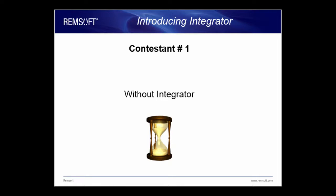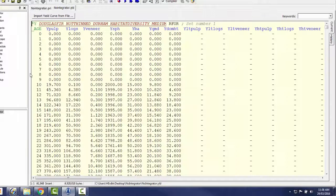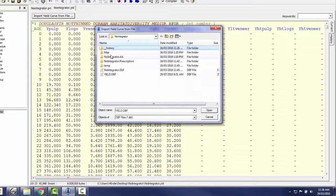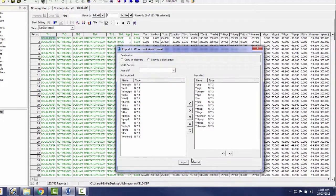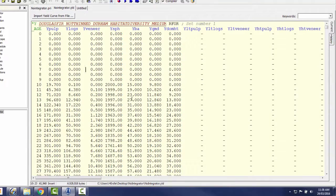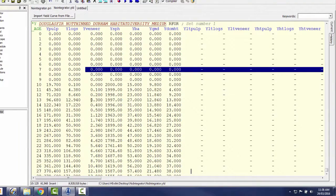First, we'll watch Hugo. He starts by using the import yield curve function, selecting the table that needs to be changed. Now, a series of select and delete and copy and paste functions update the yield section.